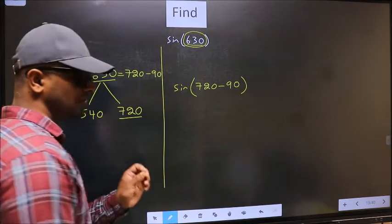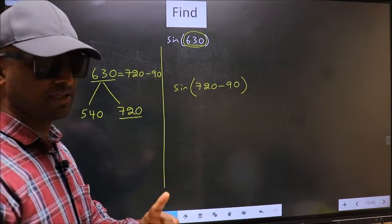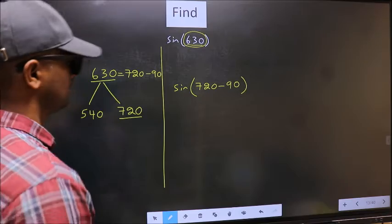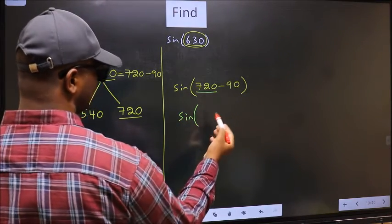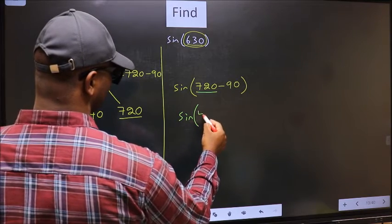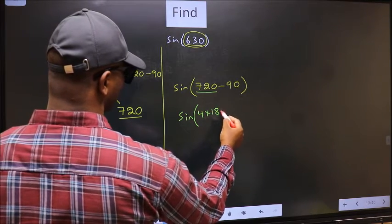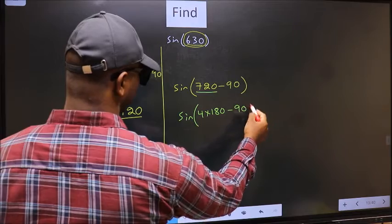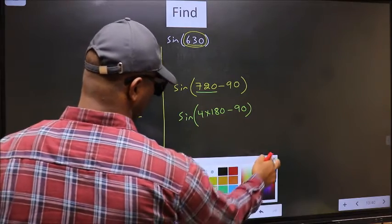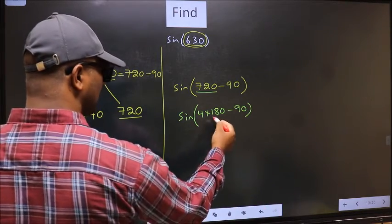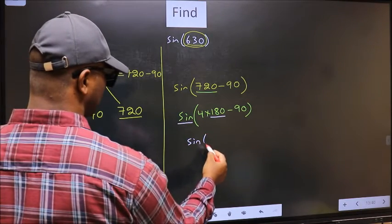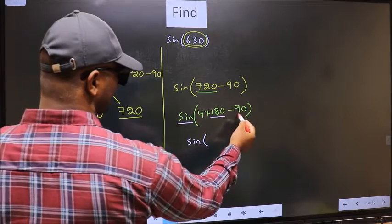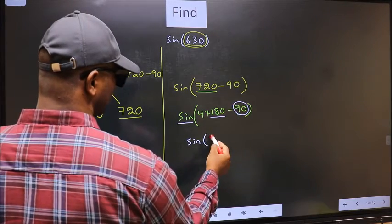This is your step 1. Next. Sine. Now in place of 720, we should write 4 times 180 minus 90. Next. Here we have 180, so sine is not going to change. It will remain sine. And inside we get this angle 90.